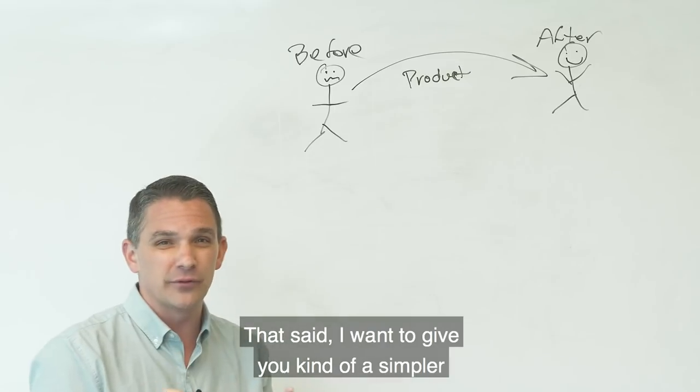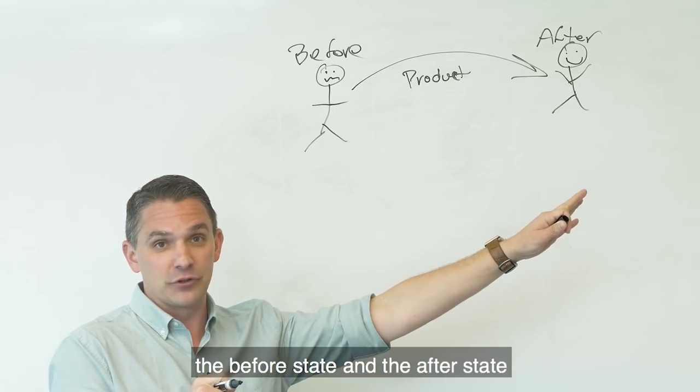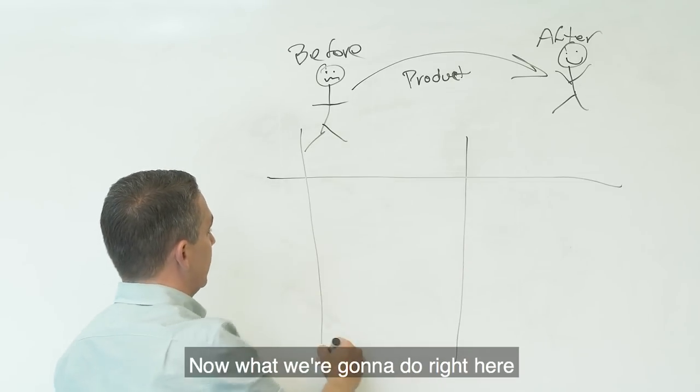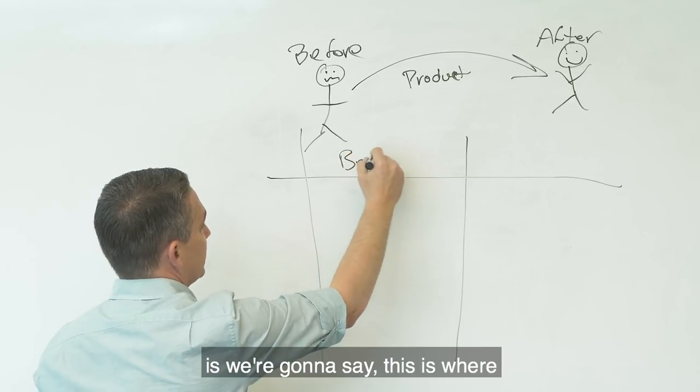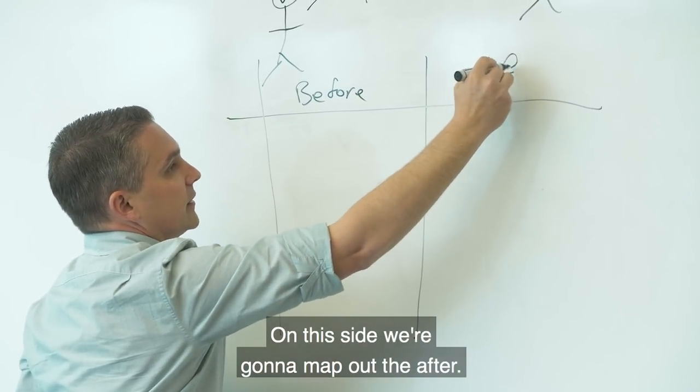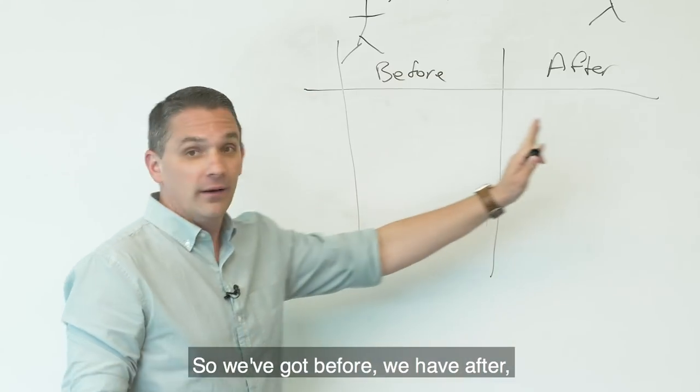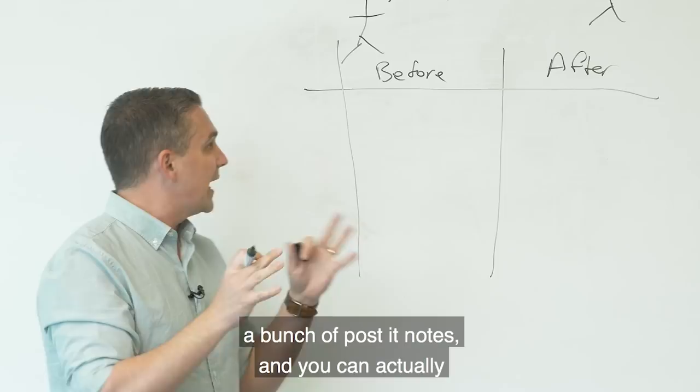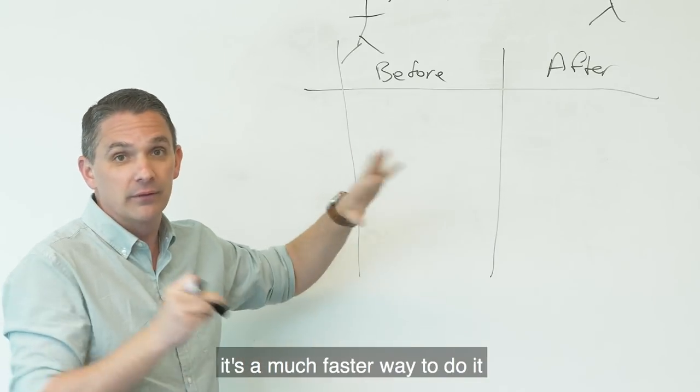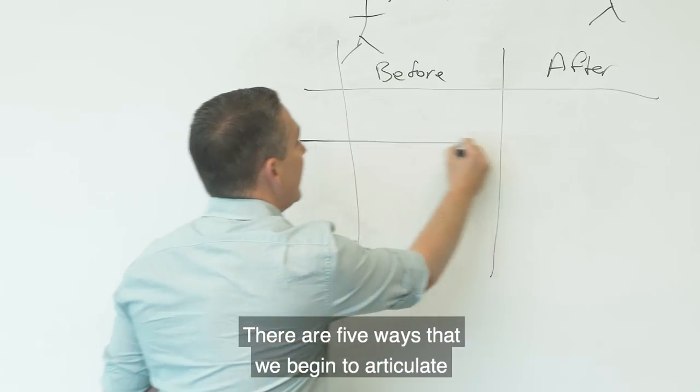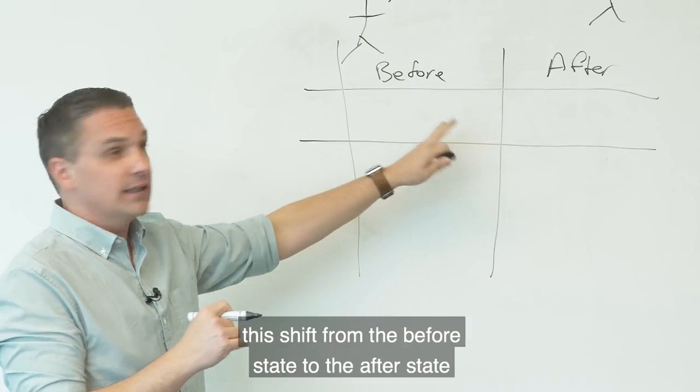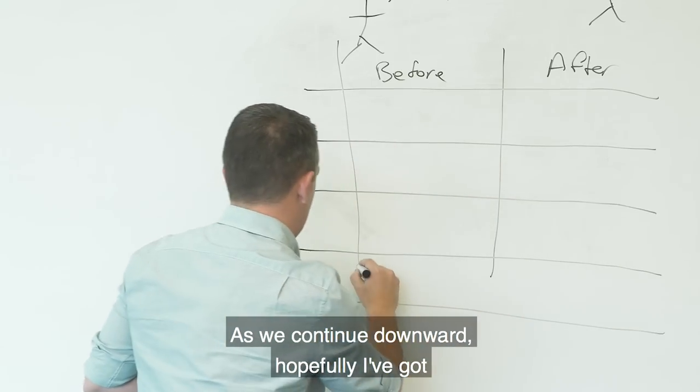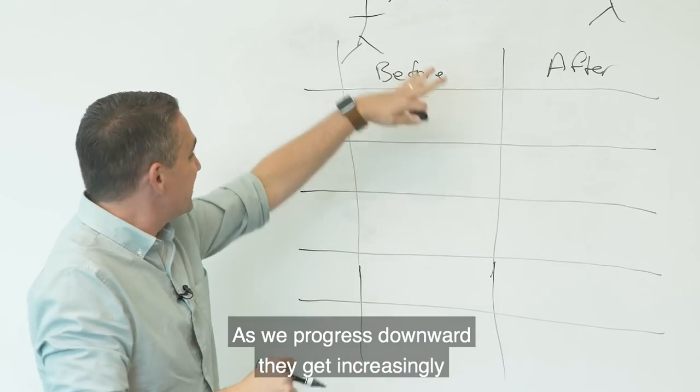That said, I want to give you a simpler framework for actually articulating the before state and the after state and the way that we deploy this. And what we do is we call it the before and after grid. Now, what we're going to do right here is we're going to map out the before. On this side, we're going to map out the after. So we've got before, we have after. I recommend trying to make this as big as possible. Gather your team. Get a bunch of sticky notes, a bunch of post-it notes. And you can actually have them write down suggestions and paste them up here. It's a much faster way to do it than writing everything down.